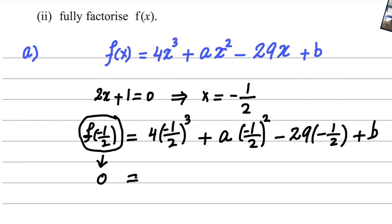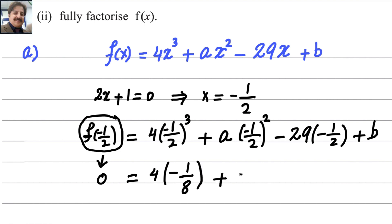Whenever a factor is given in the question, the remainder is always 0. Simplifying, we get negative 1 over 8 plus a over 4 plus 29 over 2 plus b equals 0.